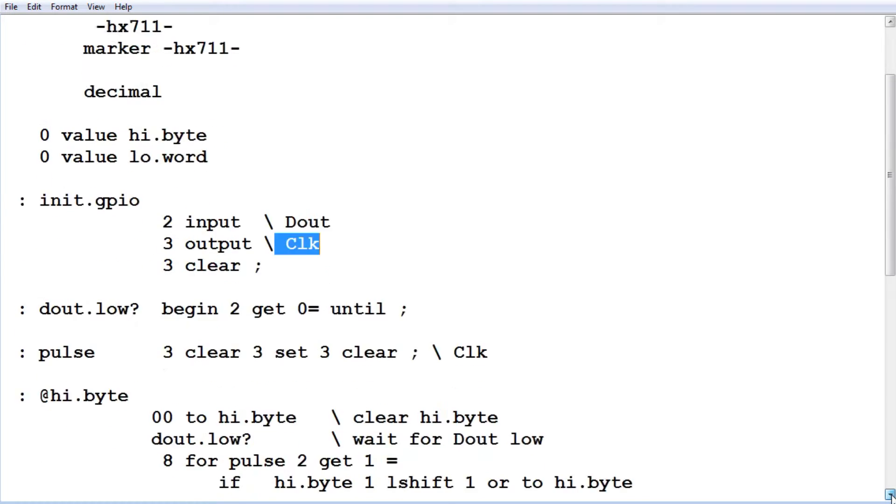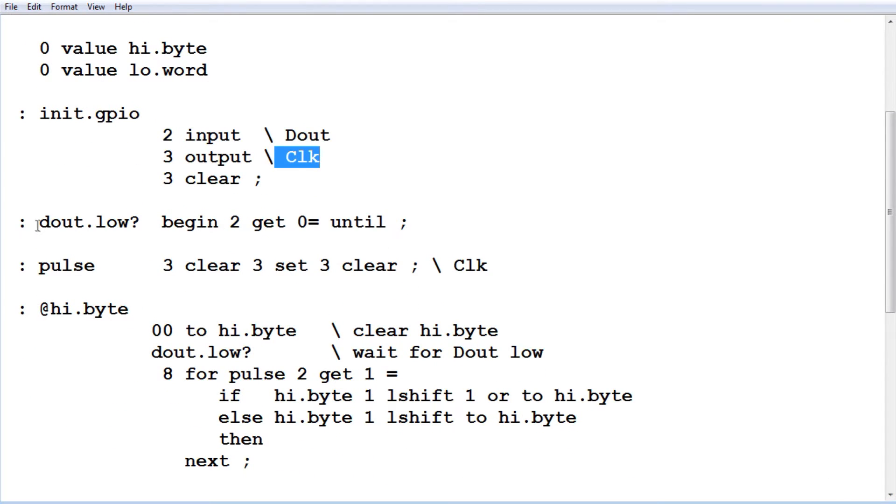Next word, it's called D out dot low question mark. That senses when D out goes low, that means it's ready for a conversion. Pulse will generate a one microsecond pulse and that's connected to the clock of the HX711.